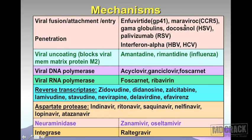Maraviroc is a CCR5 receptor antagonist, also a new agent in HIV/AIDS. Then you have gamma globulins, docosanol useful in HSV, palivizumab used against respiratory syncytial virus, and interferon alpha used for hepatitis B and C. All these drugs target the prevention of viral fusion, attachment, entry, or penetration of the virus.